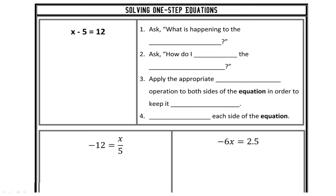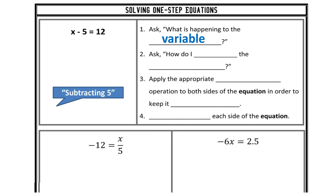The process of solving an inequality is no different than solving a one-step equation. There are just a couple little rules here and there. So let's review one-step equations. In order to start solving an equation, we need to ask two very simple questions. The first is: what's happening to the variable? Sometimes it's as easy as reading the equation.